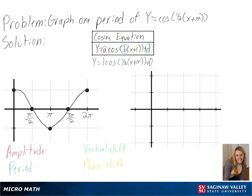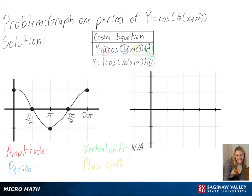We can see that we don't have a vertical shift, but we do have a phase shift of negative pi, so we will move our y-axis pi units to the left.